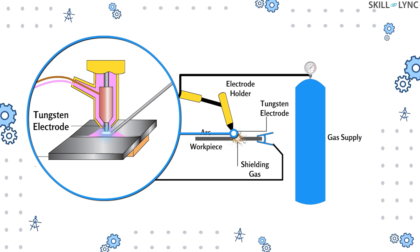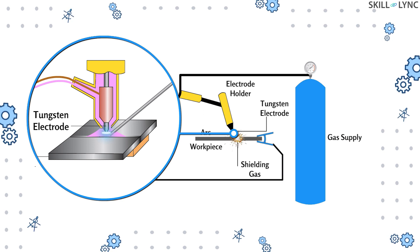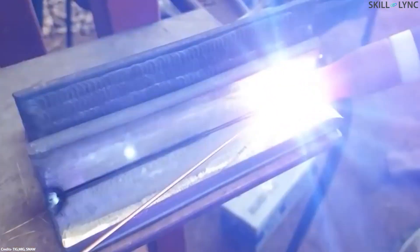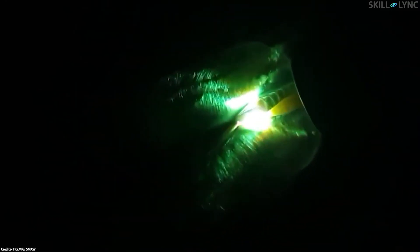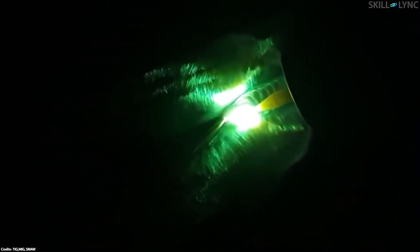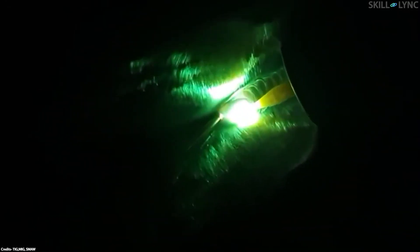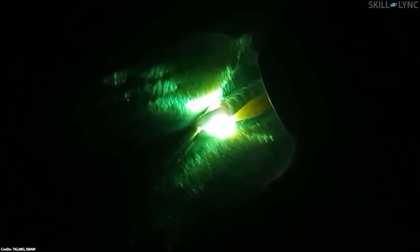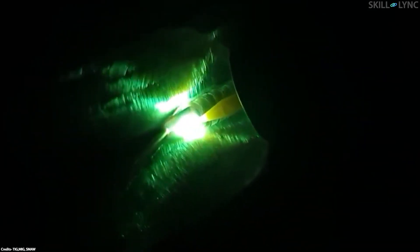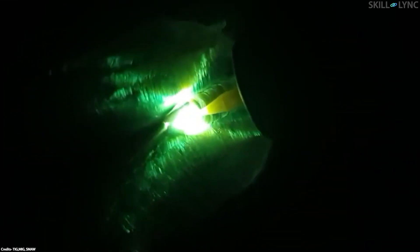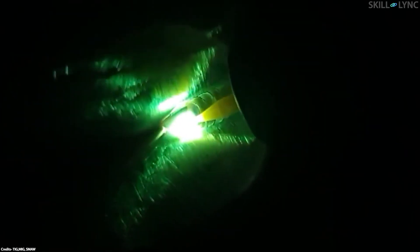The main reason tungsten is used here is due to its very high melting point of 3410 degrees Celsius. To strike a welding arc, the torch is brought close to the workpiece. Usually a knob on the handle or a foot pedal is provided to initiate current flow.